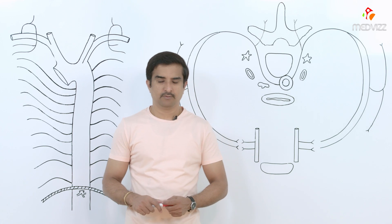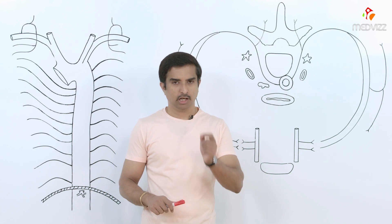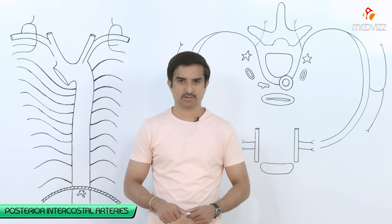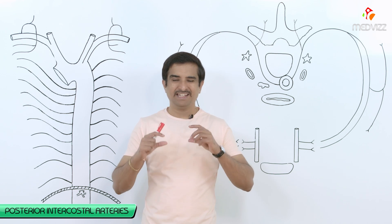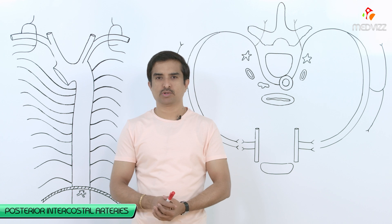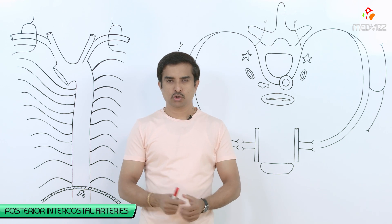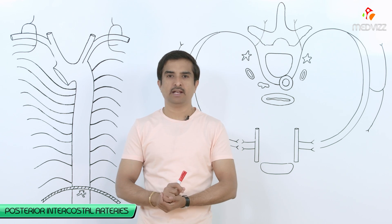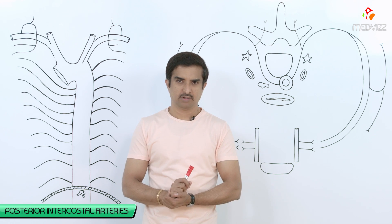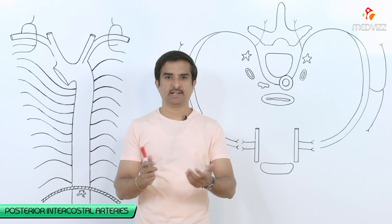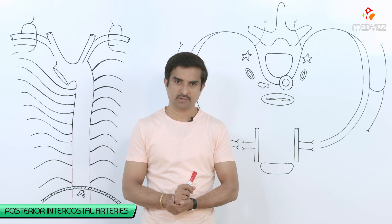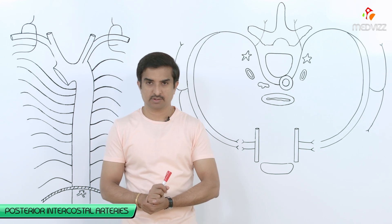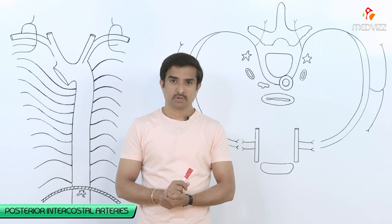In this lecture we are going to discuss the anatomy of the posterior intercostal arteries. Between each rib we have intercostal spaces, and every intercostal space is supplied by a pair of intercostal arteries — that is, anterior intercostal arteries as well as posterior intercostal arteries. There are totally 11 pairs of intercostal arteries.